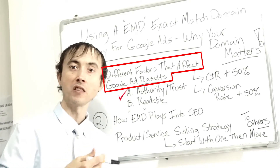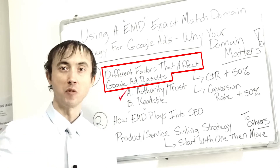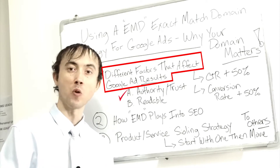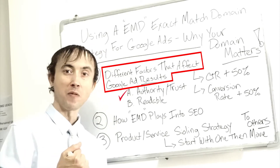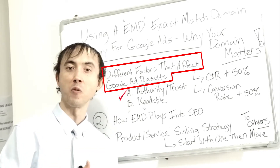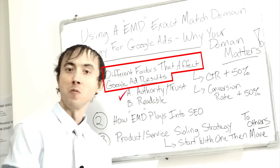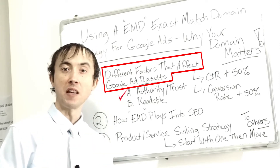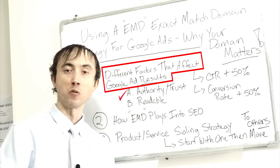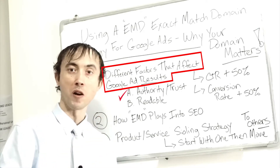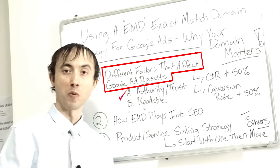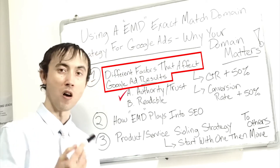The closer what you're searching for matches the domain, and the more simplified the domain is — having customrims.com over exoticcustomrims.com is going to get even more click-through and more perceived trust, because people know a shorter domain is more expensive or rare, and therefore the big-name company likely has it. More click-through rate on the ads translates into a higher market share and a lower cost per customer acquisition, all the way down the line.